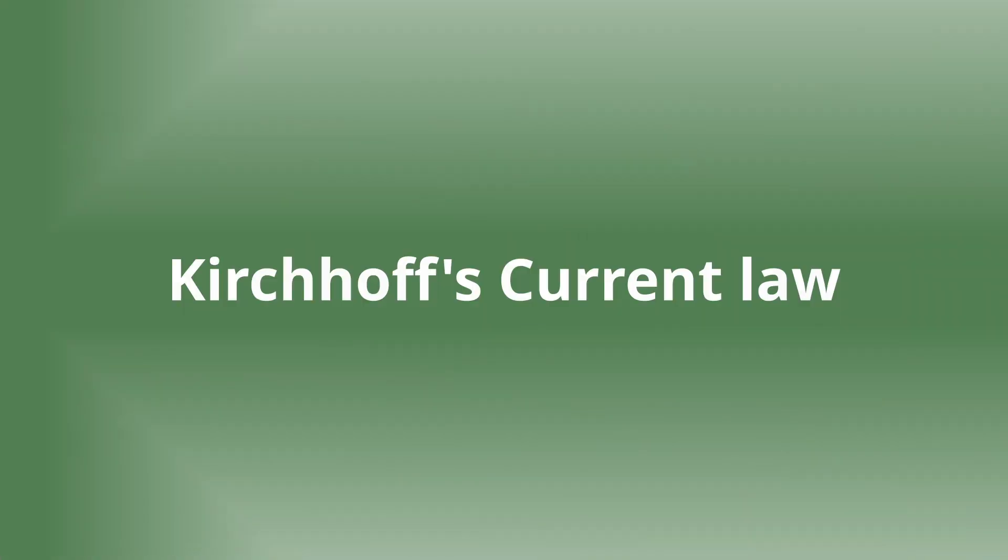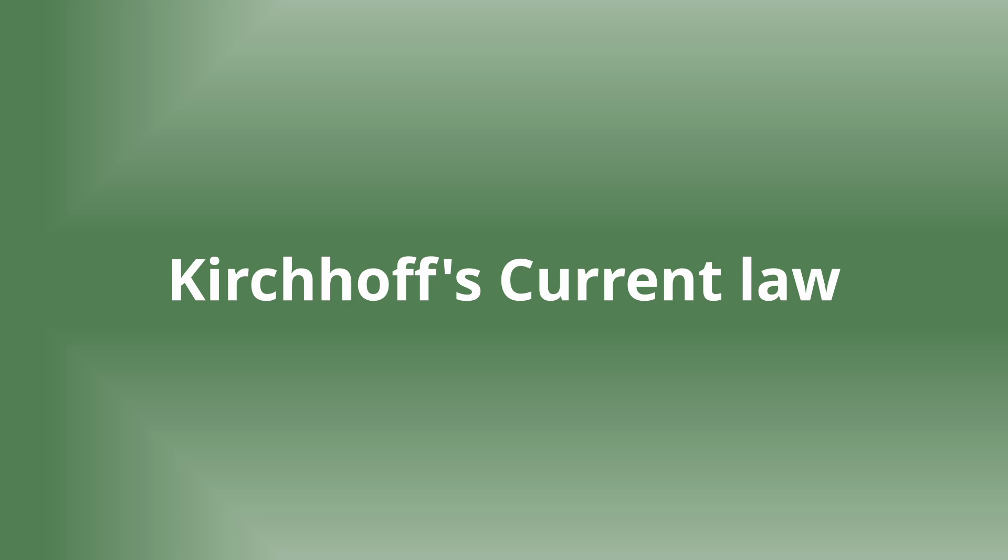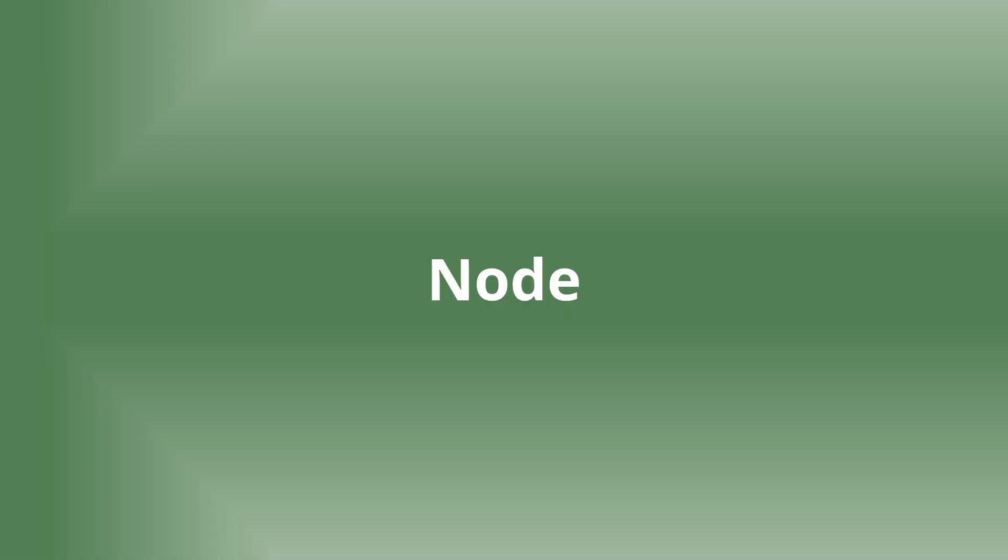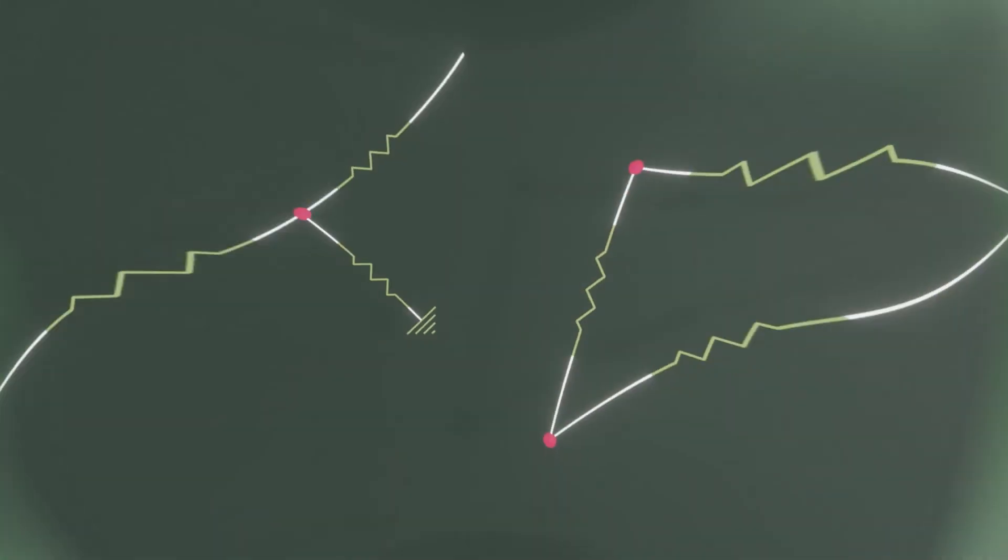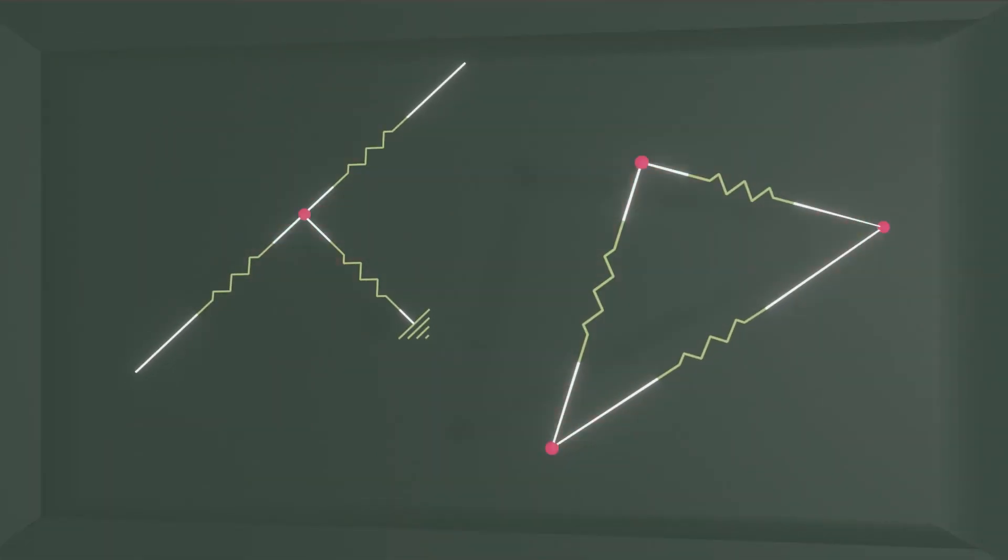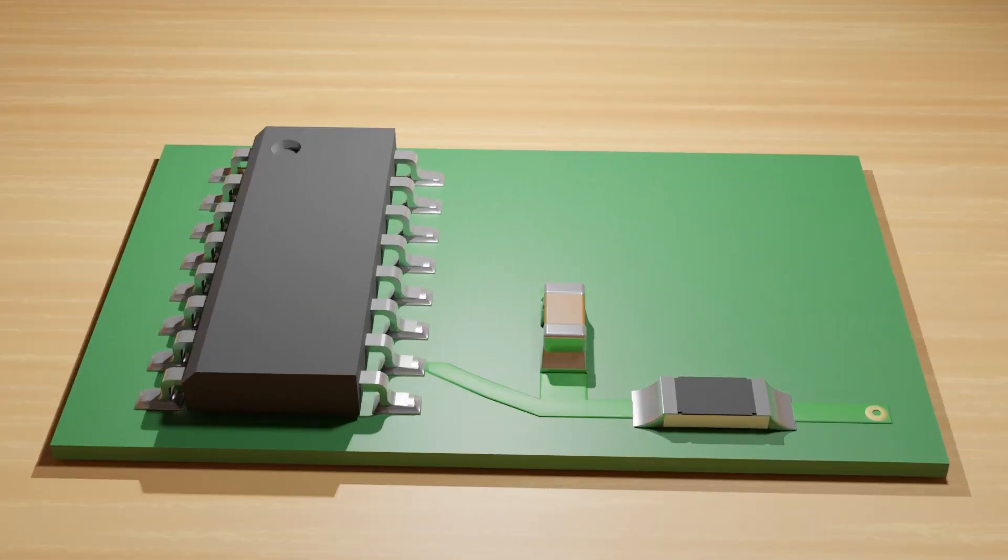The definition of Kirchhoff's law follows the same analogy. To better understand this theory, you need to know the term node. A node is a junction where two or more circuit elements are connected together.